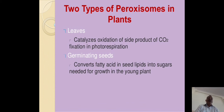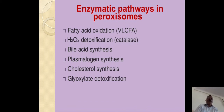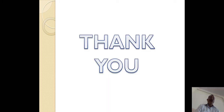There are two types of paroxysomes in plants: one in the leaves and second in the germinating seeds. In leaves, they catalyze oxidation of the side product of CO2 fixation in photorespiration. In germinating seeds, they convert fatty acids in seed lipids into sugars needed for plant growth. The enzymatic pathways in paroxysomes include phytic acid oxidation for detoxification, bile acid synthesis, plasmalogen synthesis, cholesterol synthesis, and glyoxylate detoxification. Thank you very much.